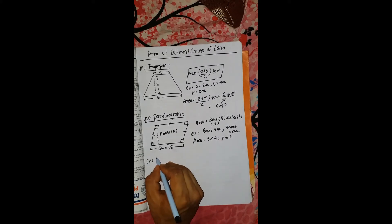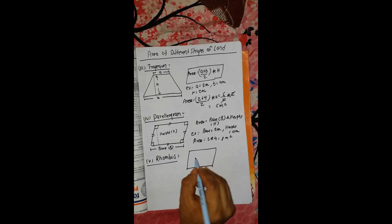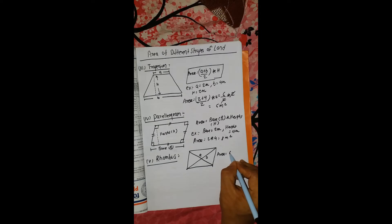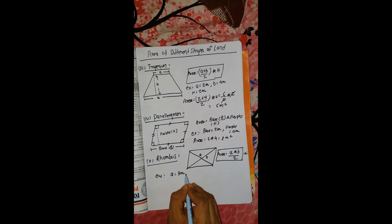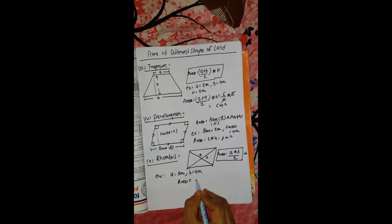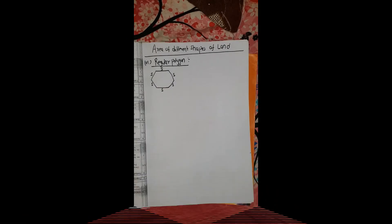Now for a rhombus. A rhombus has diagonals — diagonal A and diagonal B. The area formula is: area equals A into B divided by 2. For example, A is equal to 3 meters and B is equal to 4 meters. Area is equal to 3 into 4 divided by 2, which gives 6 square meters.